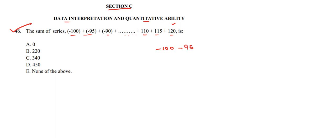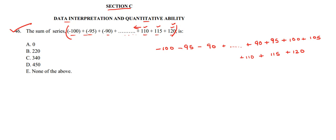This series can also be written as: minus 100, minus 95, minus 90, dot dot dot, and then continuing with 90, 95, 100, 105, 110, 115, 120. We can guess the numbers before 110 — since the difference is 5, we can include plus 90, plus 95, plus 100, plus 105, plus 110, plus 115, plus 120.